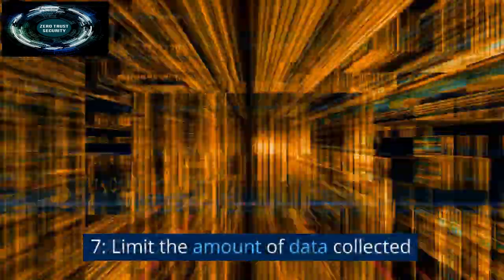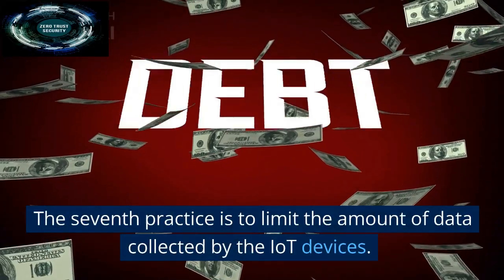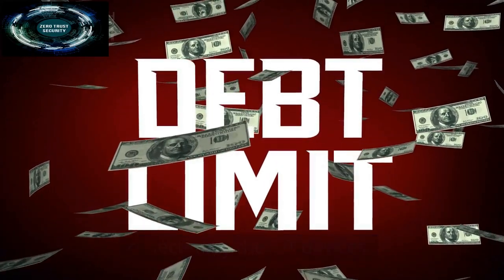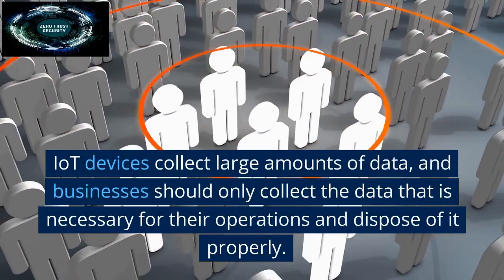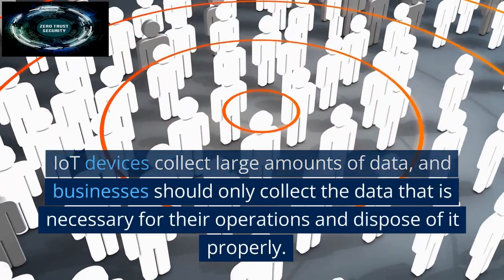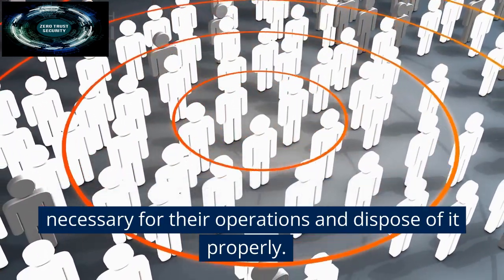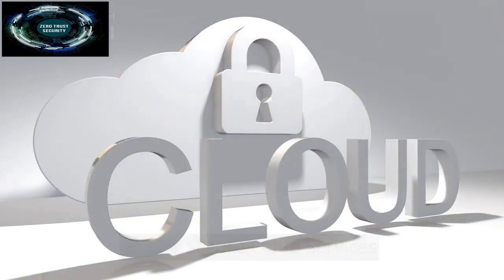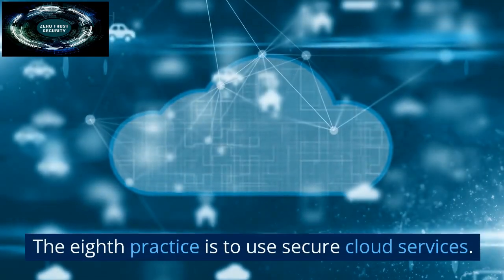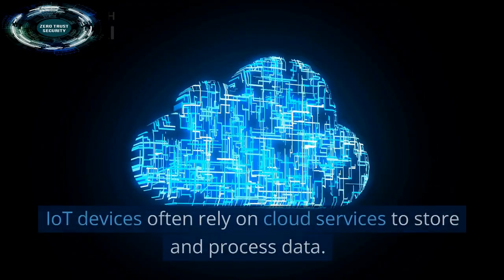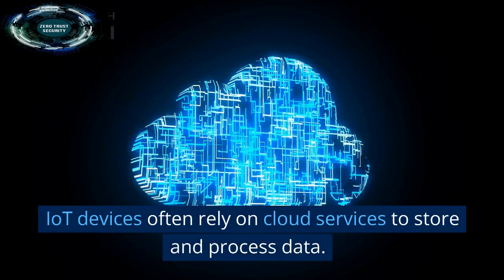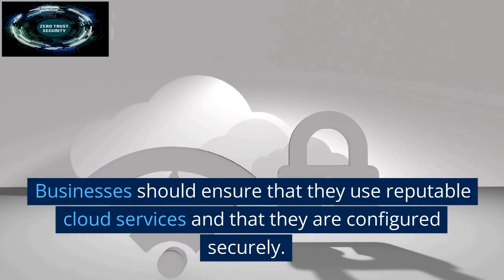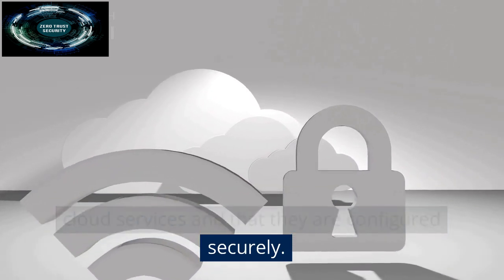Best practice seven: Limit the amount of data collected by the IoT devices. IoT devices collect large amounts of data, and businesses should only collect the data that is necessary for their operations and dispose of it properly. Best practice eight: Use secure cloud services. IoT devices often rely on cloud services to store and process data. Businesses should ensure that they use reputable cloud services and that they are configured securely.